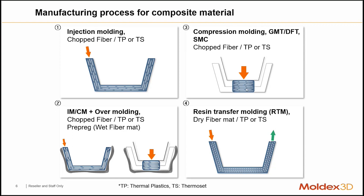There are other technologies that have come out — things like compression molding, where we take a bulk charge and squeeze it down to fill out the desired volume. We also have injection compression molding, where we inject a small amount of material so the flow length is shorter, then compress that material by injecting into a more open mold. This can give us a little bit more control over the fiber orientation versus an isolated injection molding type of process.